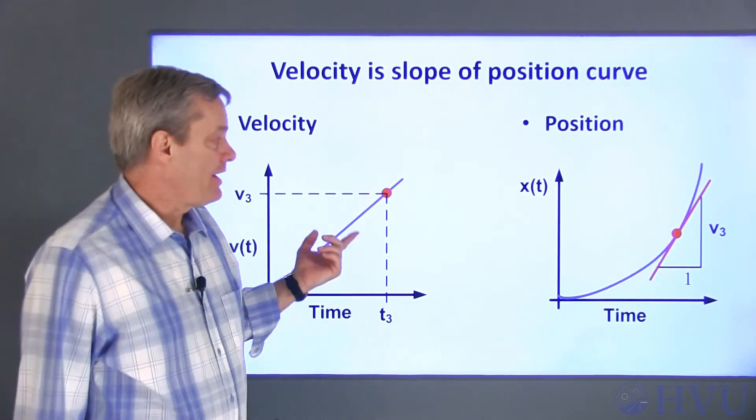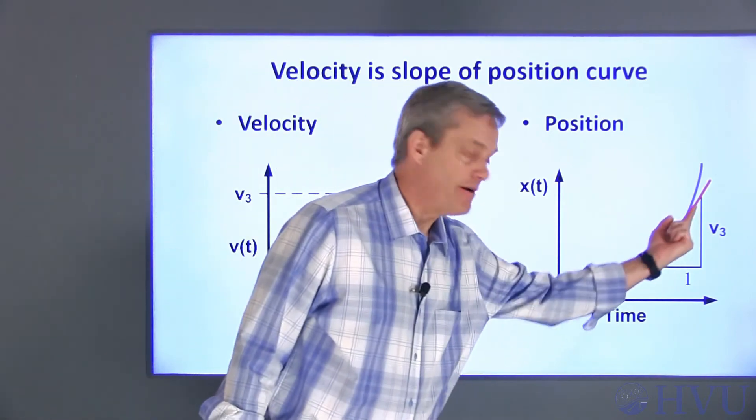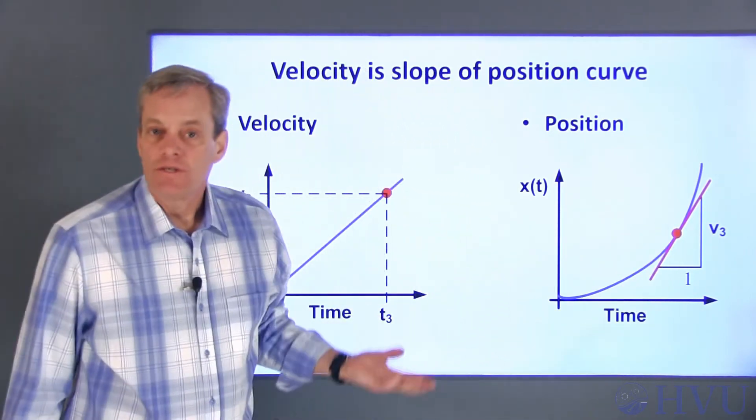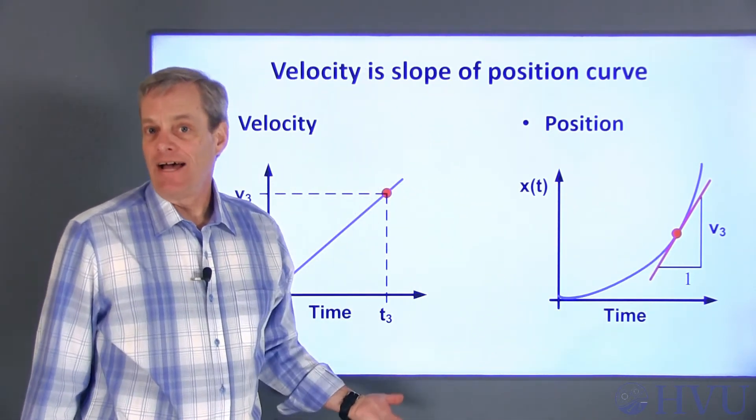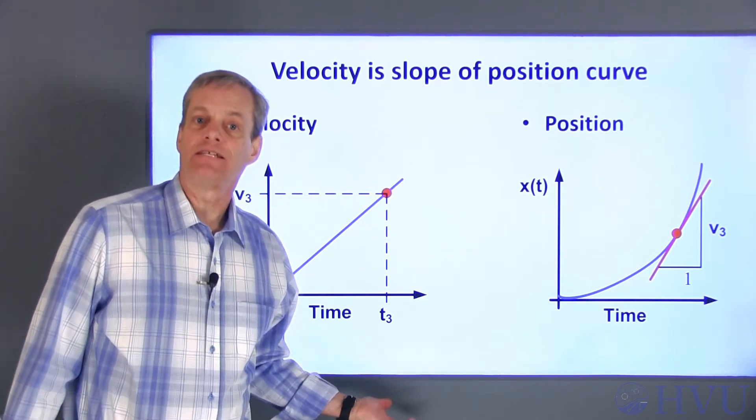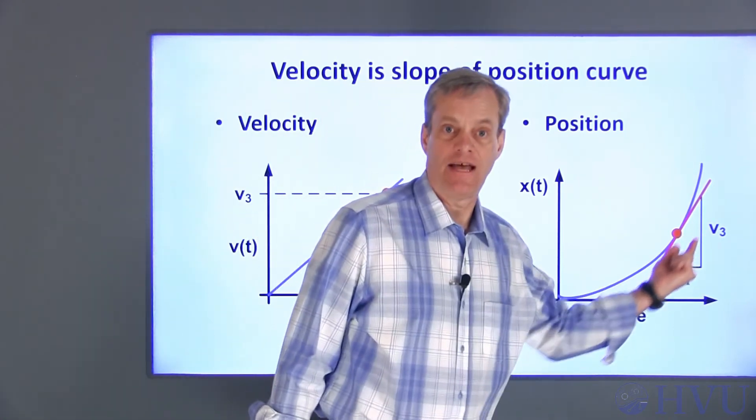Likewise, at a later time t3, the velocity will be higher still. The velocity of the cart at any time is the slope of the line that's tangent to the position curve at that time.